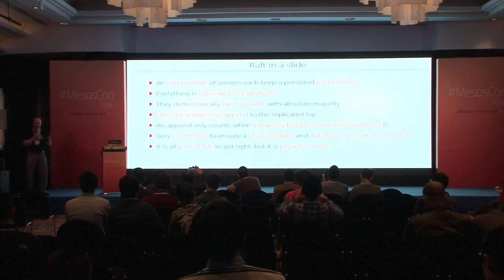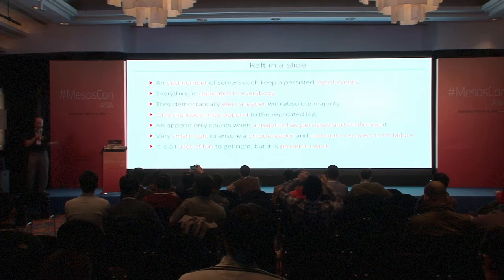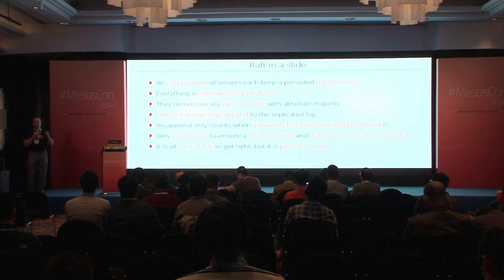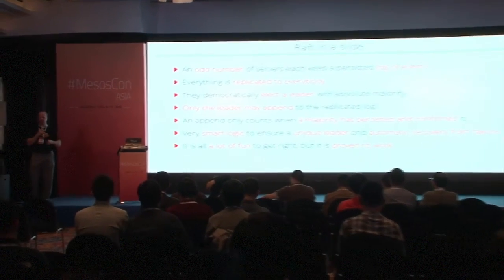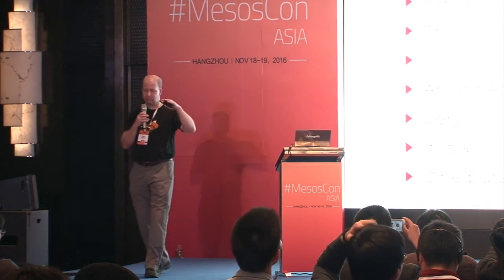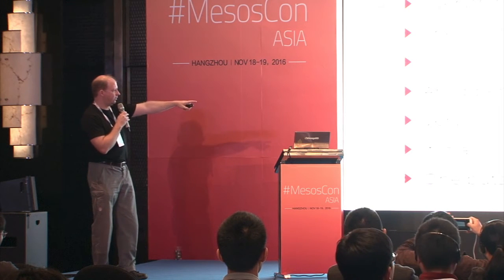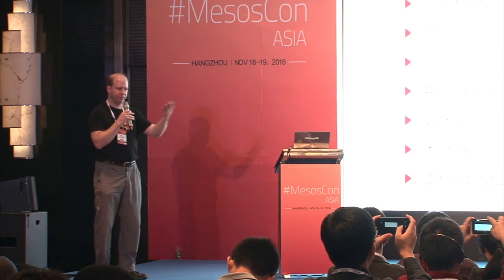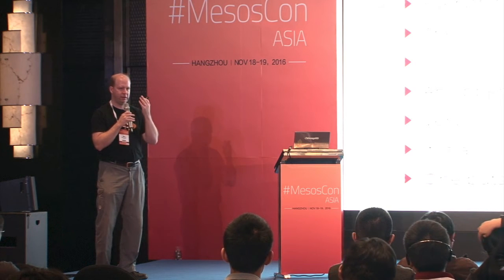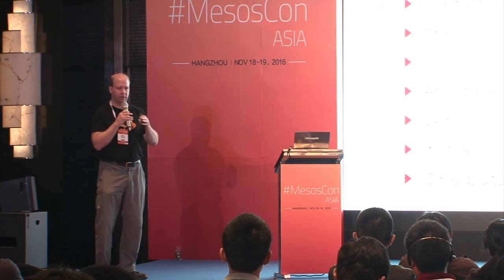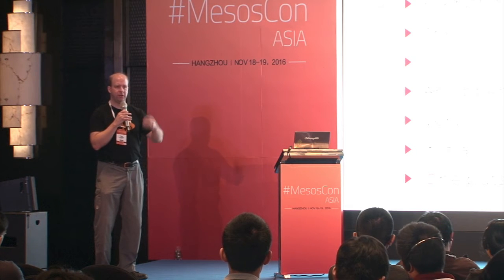Usually, what one does with this replicated log is put on top of it a key-value store which behaves like a database. Every change to the key-value store is written to the log as a transaction. The API for such a RAFT system is made so that you can talk to the leader and say you want something changed. The leader appends the change to the replicated log, everything is replicated to at least a majority, and then it counts as a change to the database.